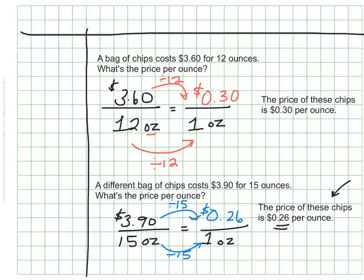That's one example of when I use unit rates, particularly at the grocery store, but we use unit rates in many different ways. Remember, the essential question of this video is: what is a unit rate, and how do we calculate it? A unit rate is when we figure out the value of the ratio when one of the quantities is one. We calculate it by setting up equivalent ratios and scaling down to find the value.